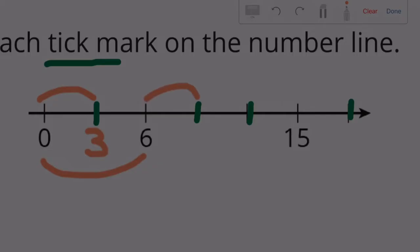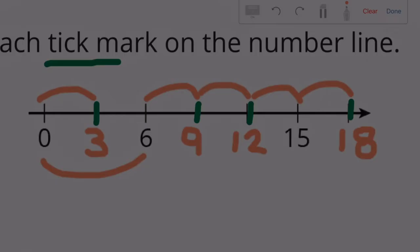Filling in the number line by adding three each time: 0, 3, 6, 9, 12, 15, 18. All tick marks are now filled in.